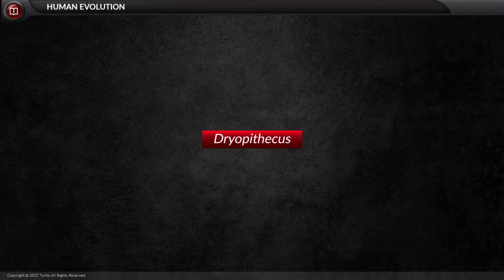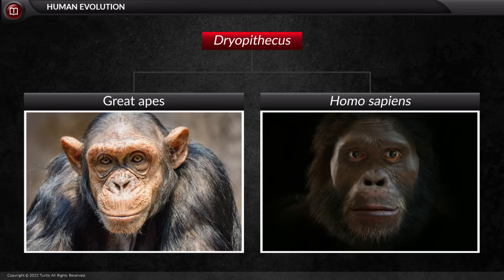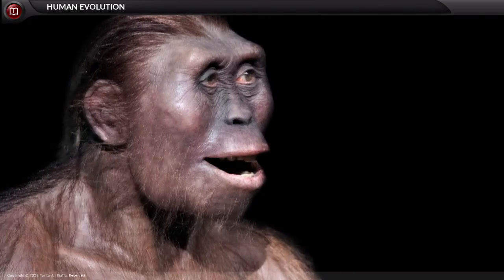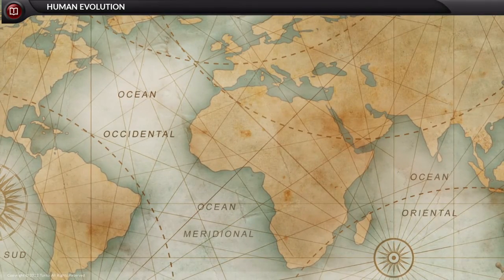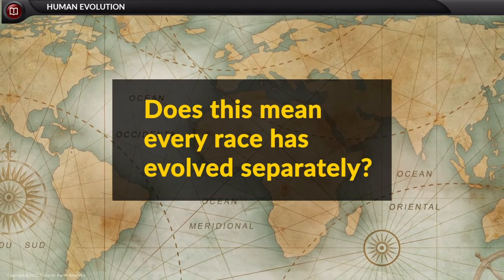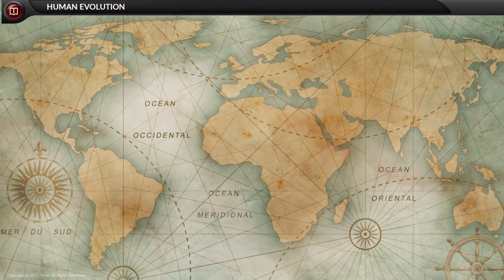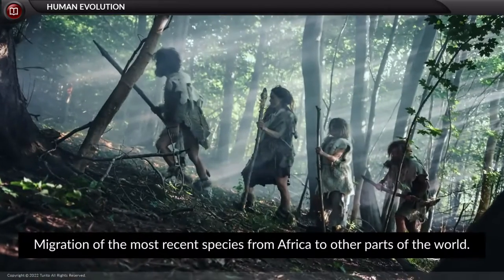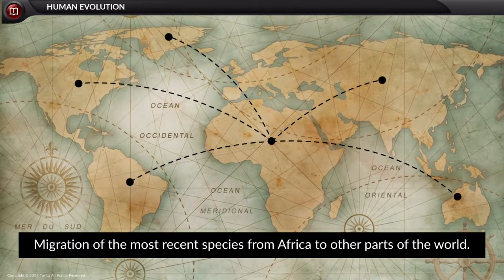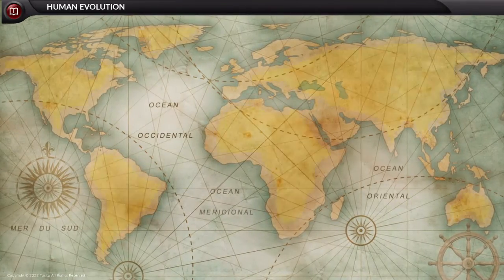Dryopithecus further evolved into two different lineages to form great apes and Homo sapiens. The most interesting point is that there are different races of Homo sapiens spread all throughout the world. This does not mean every race evolved separately. Instead, the entire evolutionary process happened in Africa. After human evolution from Africa, there was a migration of the most recent species from Africa to other parts of the world, followed by colonization as humans evolved into different races present in different parts of the world.